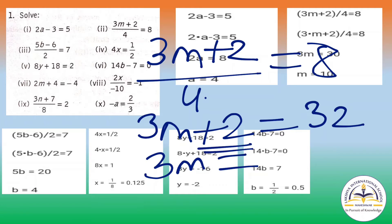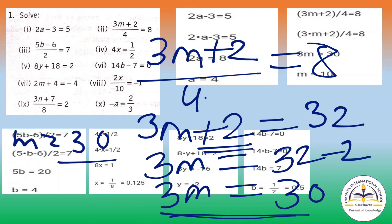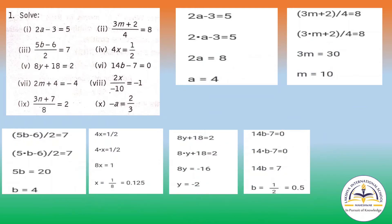Now 3m equals to — you have to send minus 2 to the RHS so the sign will change. So 3m equals to 32 minus 2, you will get 30. So m equals to 30 by 3, you will get m equals to 10. Now question number 3: (5b minus 6) by 2 equals to 7.